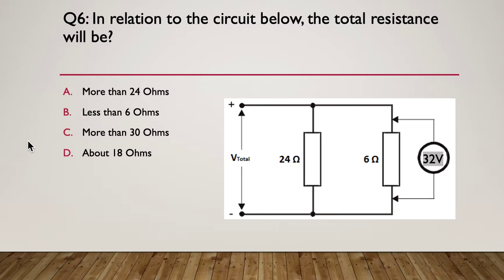Question six: in relation to the circuit below, the total resistance will be what? So we've got 24 ohms in parallel with 6 ohms, and we have 32 volts across the 6 ohms. So what is the total resistance? Here's your hint: calculate ohms in parallel, and remember one on R total equals one on R1 plus one on R2 plus one on R3, etc.